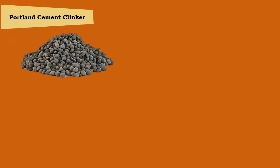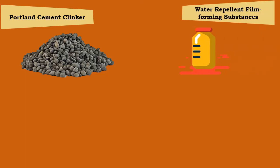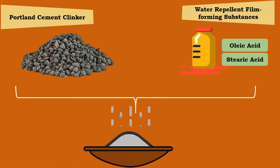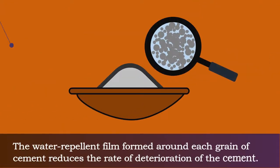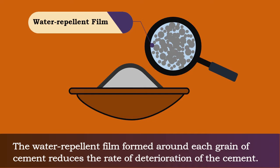Hydrophobic cement is obtained by grinding ordinary Portland cement clinker with water repellent film forming substances such as oleic acid, stearic acid, etc. The water repellent film formed around each grain of cement reduces the rate of deterioration of the cement during long storage, transport, or under unfavorable conditions.